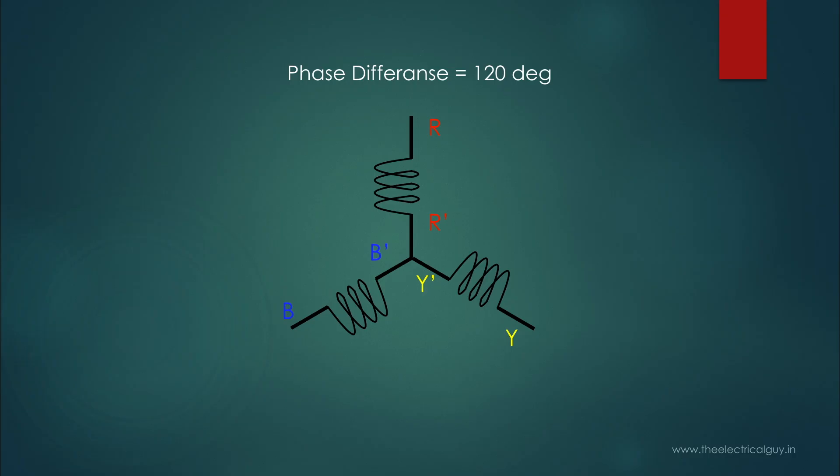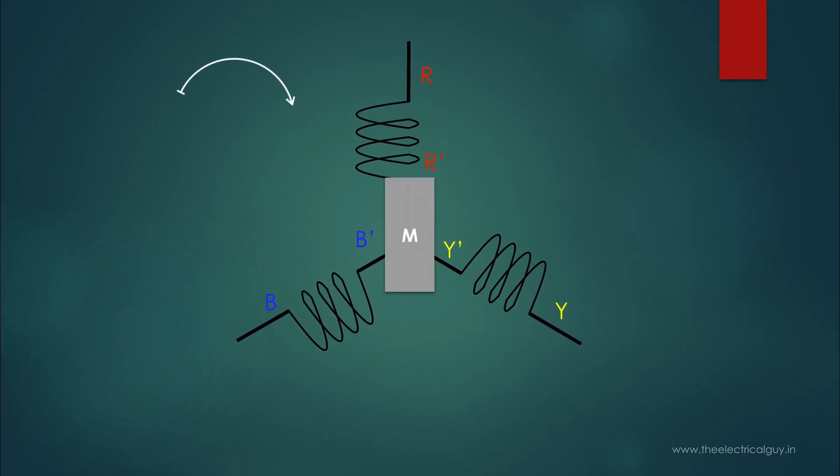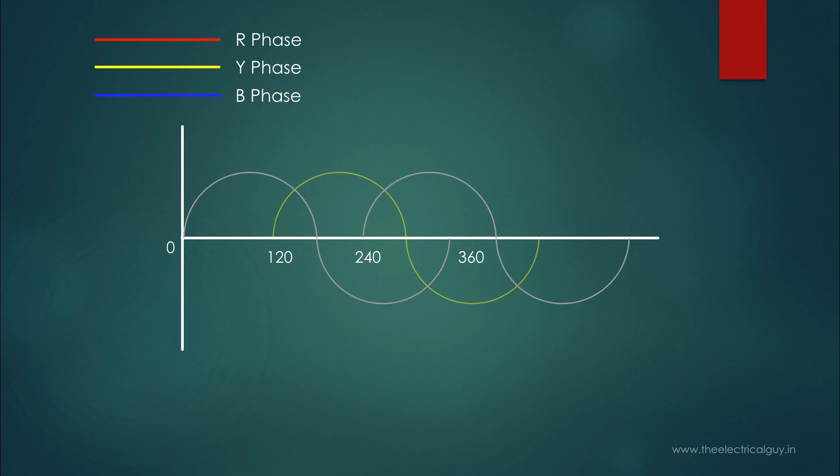Let's say the magnet is rotating in a clockwise direction. That means winding Y will reach its peak value first after winding R, and then winding B will have its peak. As you might have guessed correctly, winding Y reached its peak value after the magnet has rotated 120 degrees from its initial position. Similarly, when the magnet will rotate 240 degrees from its initial position, winding B will reach its peak value.